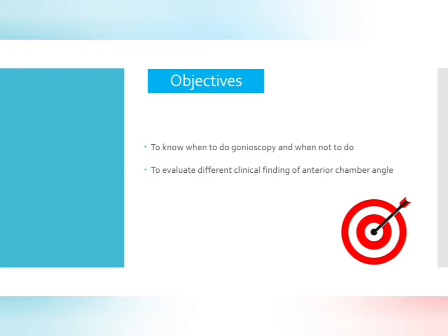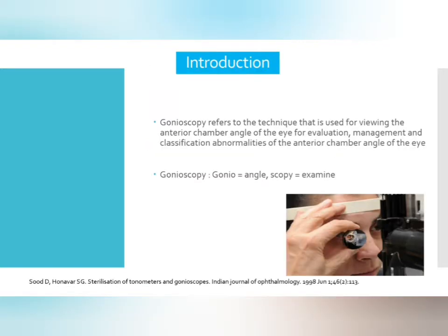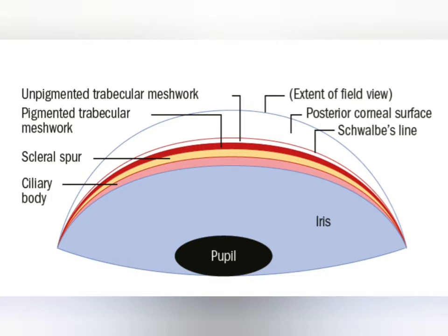From this video you will get to know when to do gonioscopy and when not to do gonioscopy. In this presentation you will see different types of clinical findings in the anterior chamber angle. Gonioscopy: two terms — 'gonio' means angle, 'scopy' means to examine. It is the technique used to view the anterior chamber angle for evaluation, management, and classification of different types of abnormalities.